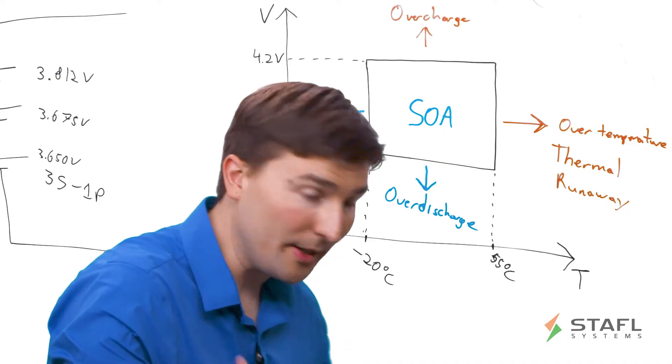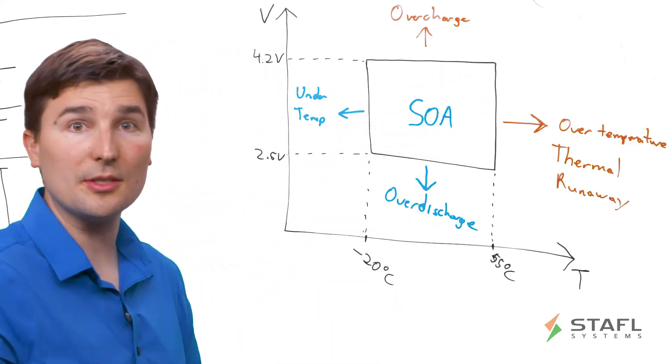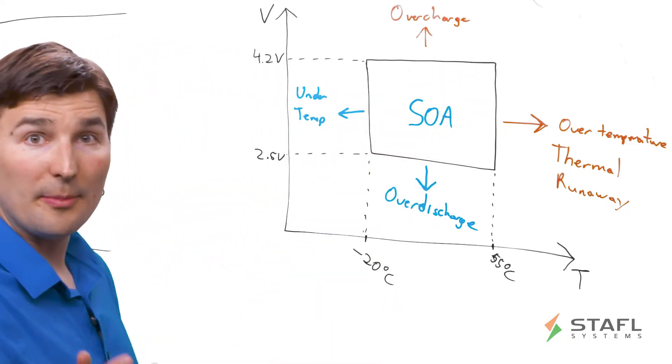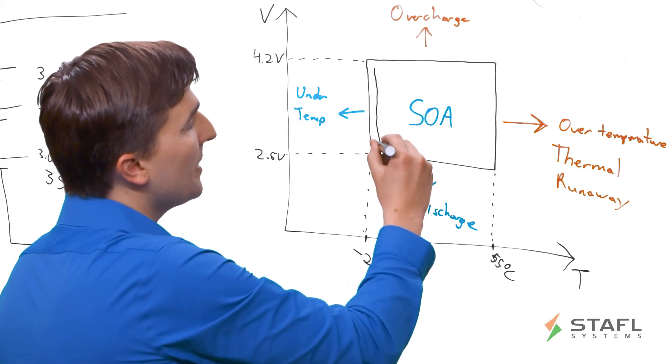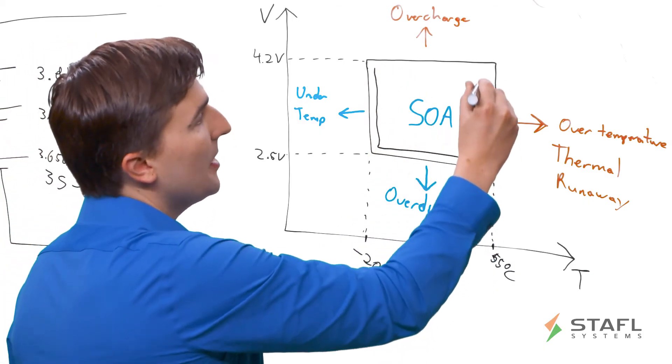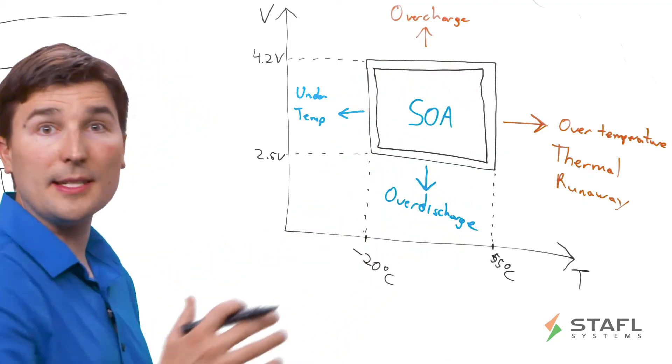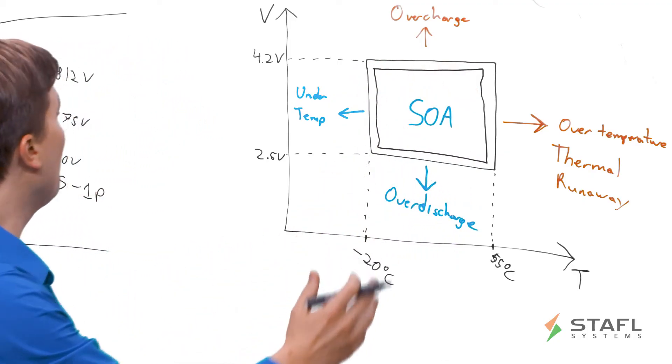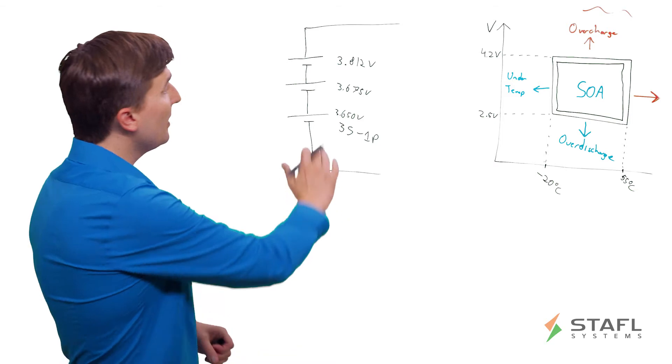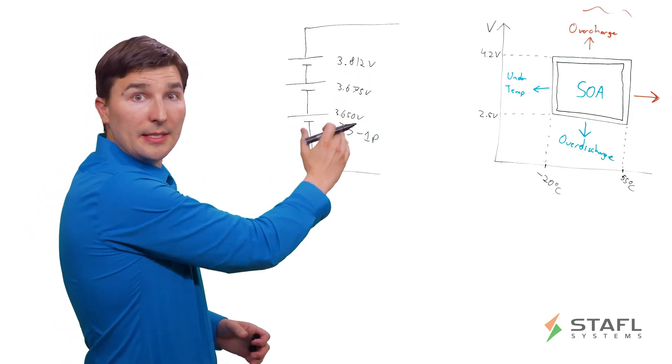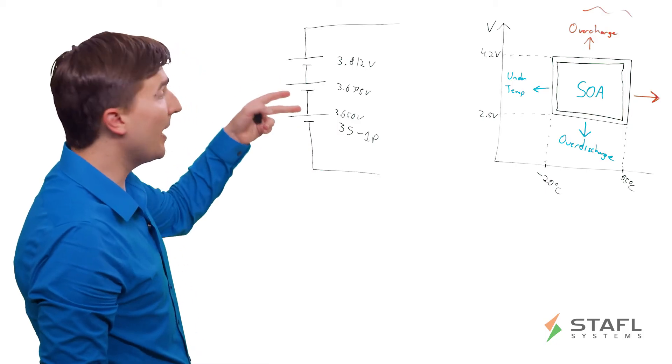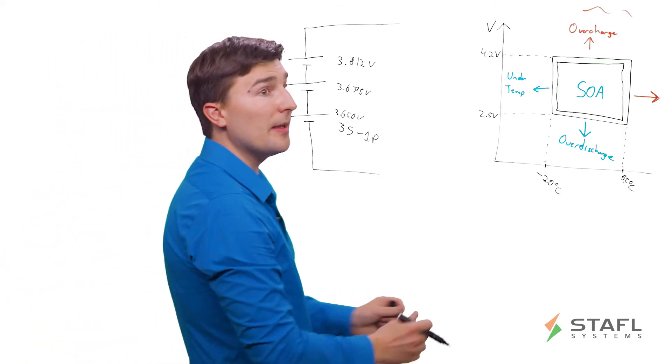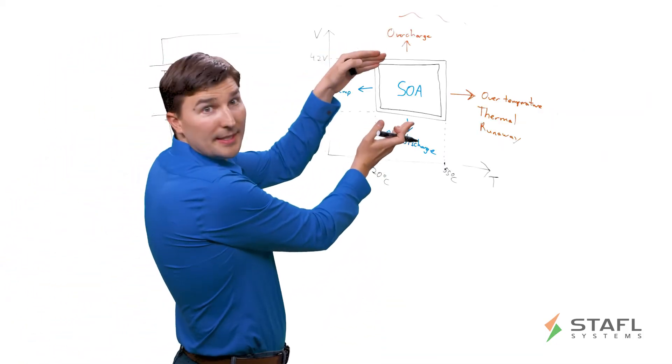So how do you avoid getting your battery pack into these conditions in the first place? Well, that's the job of the BMS. The BMS is going to be monitoring the condition of all the lithium ion cells in the system. So for example, as we discussed over here, each of these lithium ion cells in series has a different voltage. So the BMS needs to be looking at every single voltage to make sure that it stays within this safe range.